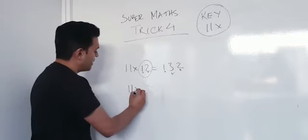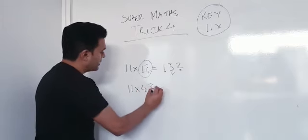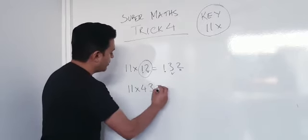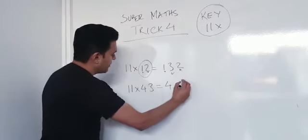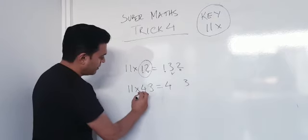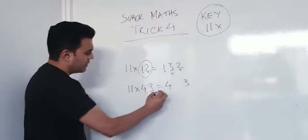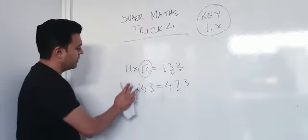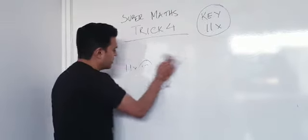Same way if we've now got 43 times 11. If we've got 43 times 11, we've got the 4 there and the 3 there. What's 4 plus 3? 7. That's the answer, 473. That's the system. Now, watch this.